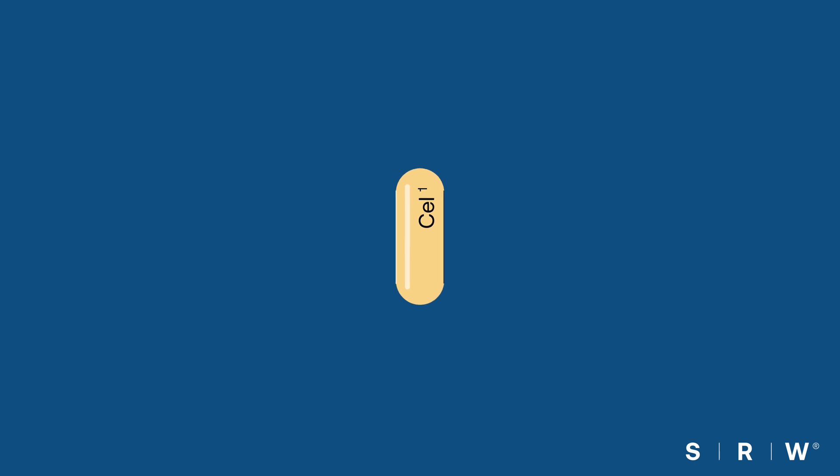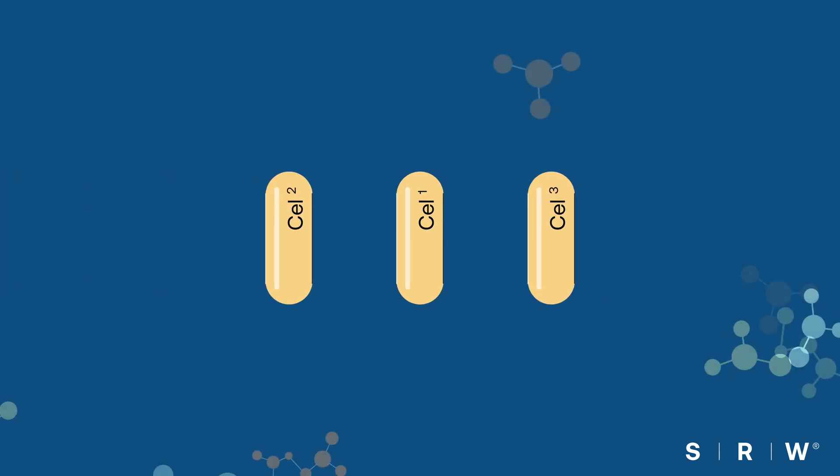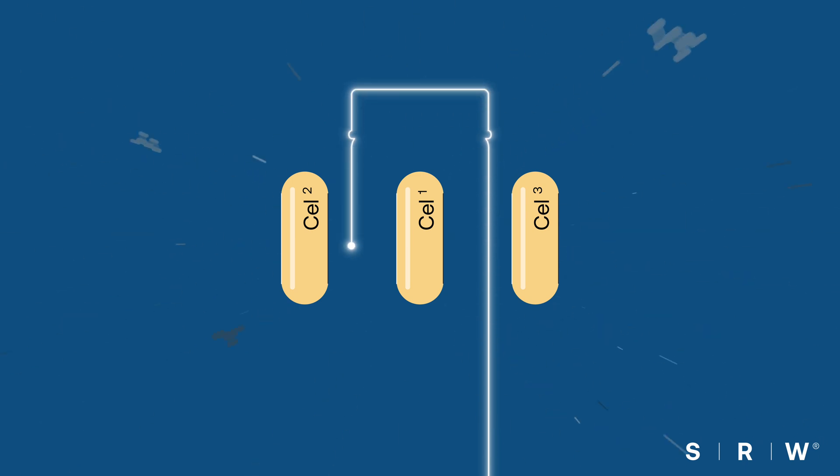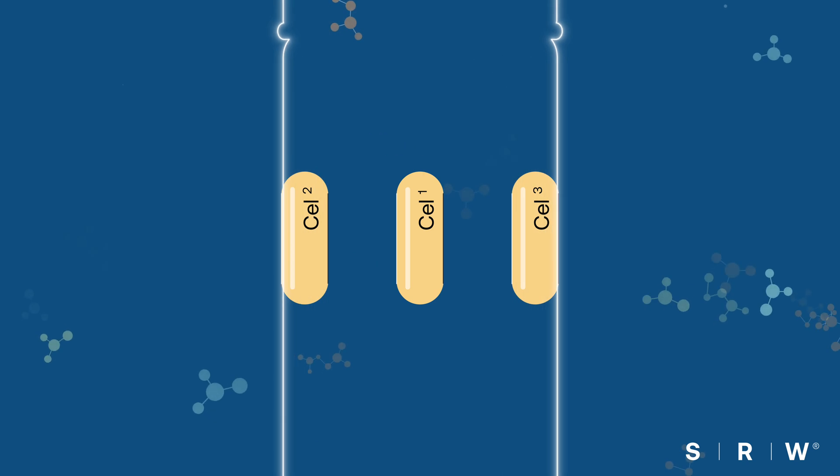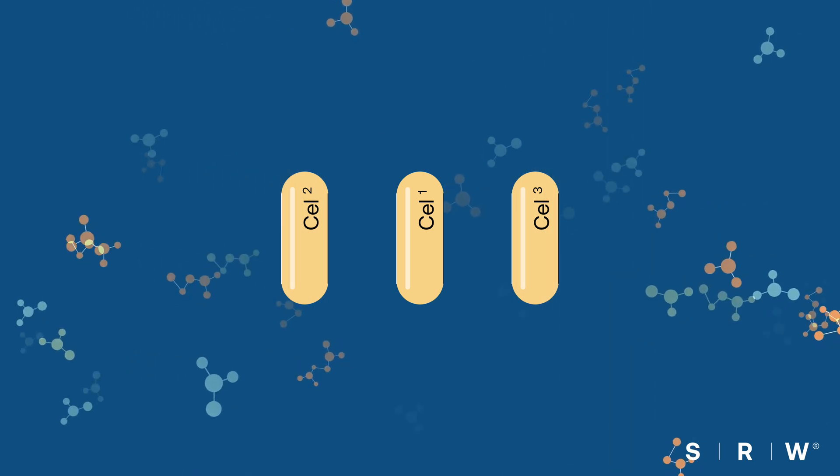Our team developed a cellular system range using the science of the Hallmarks of Aging to directly support the nine functional areas of the cell that change with age. We developed three formulations, each focusing on three of the nine hallmarks to support optimal cell function as you age.